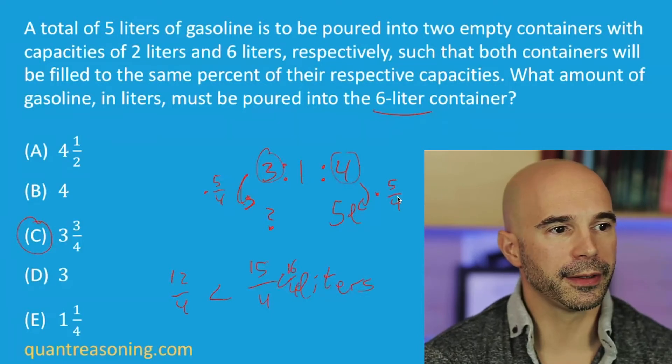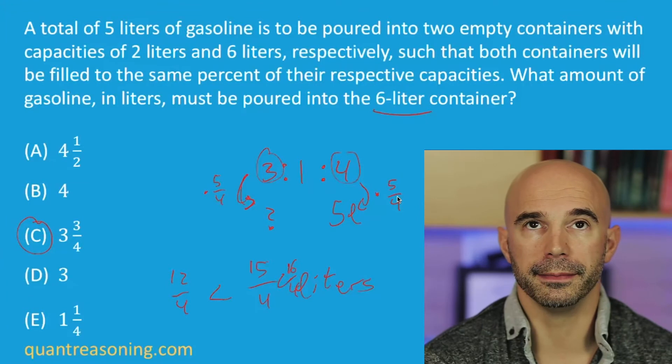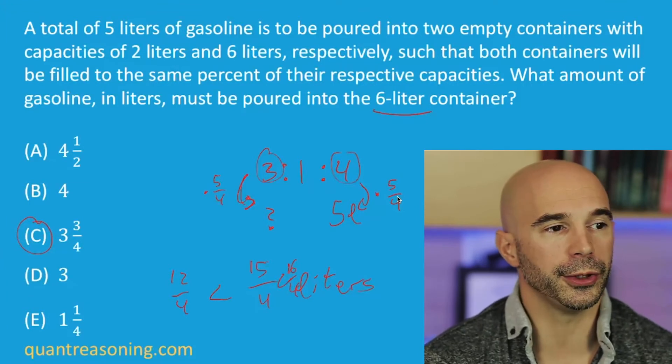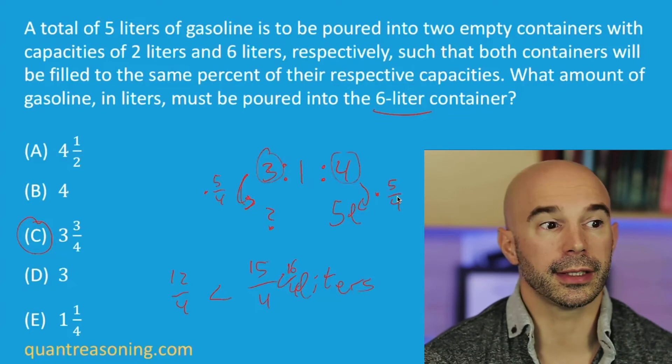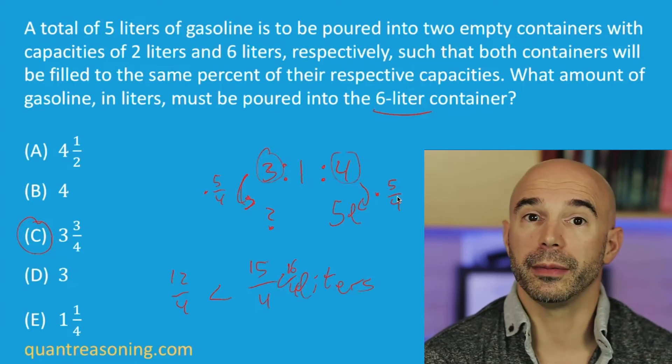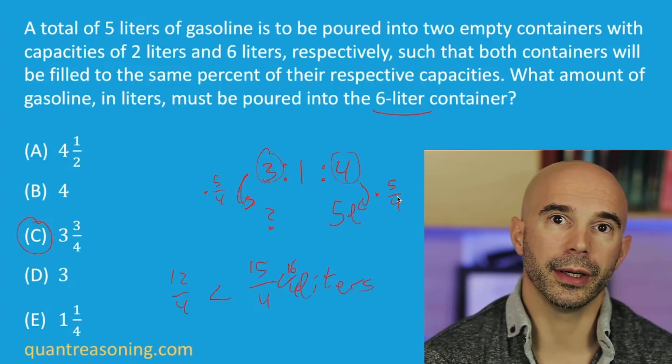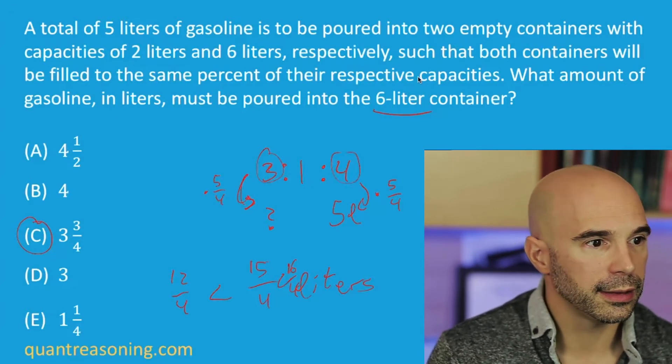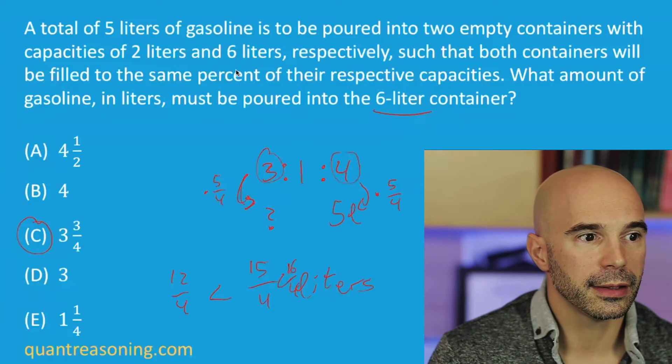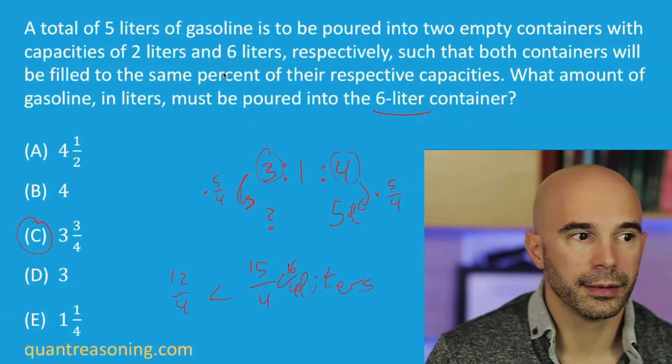Parash did something really nice, very similar to my solution, just a different lens through which to look at it. He said the total capacity for these two containers is eight liters, and the total amount of gasoline is five liters. So I know exactly what this percent will be because it's the same percent.